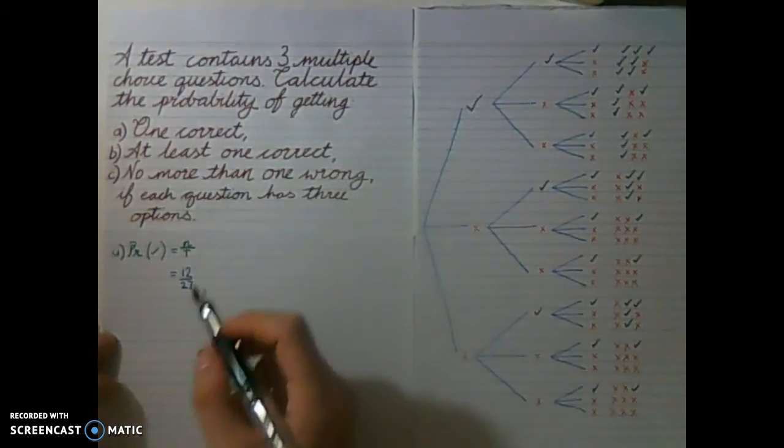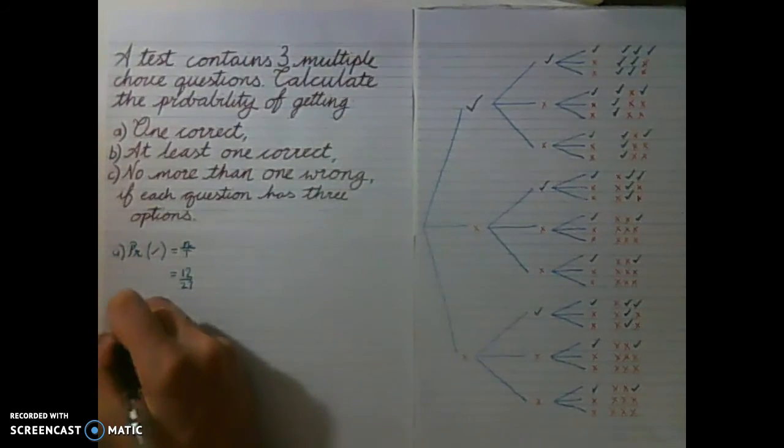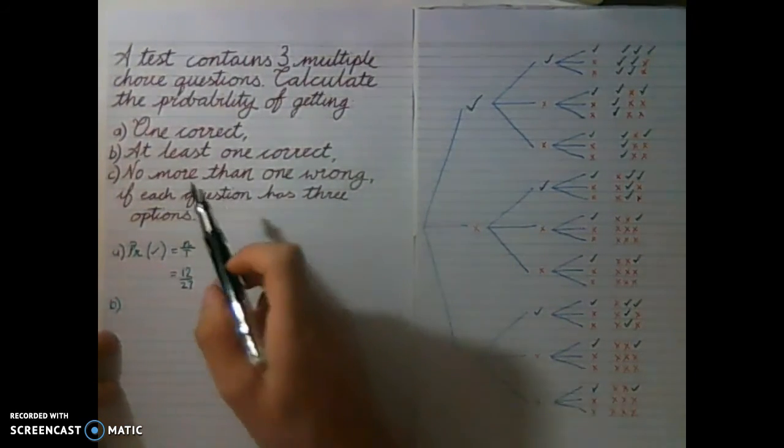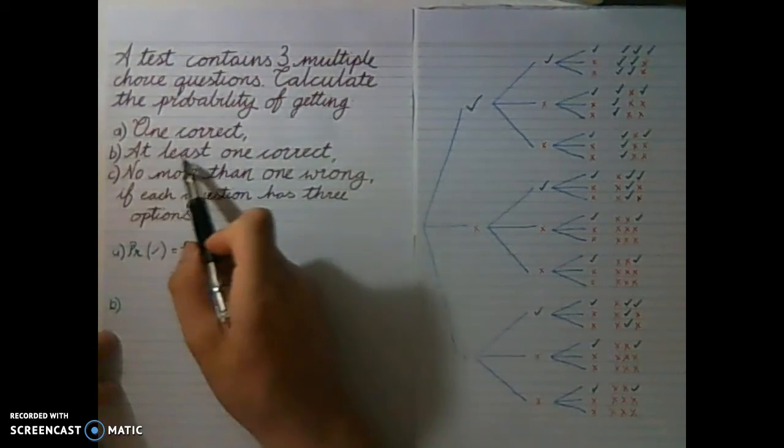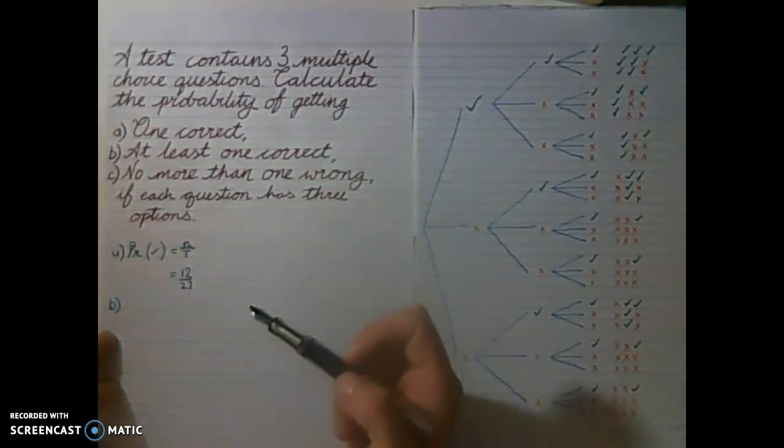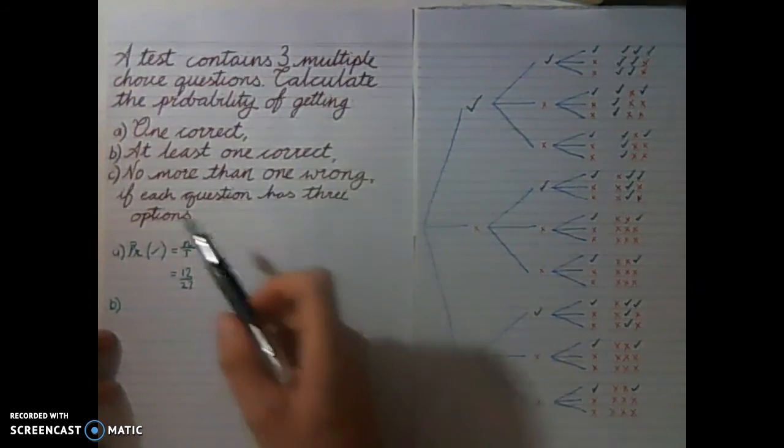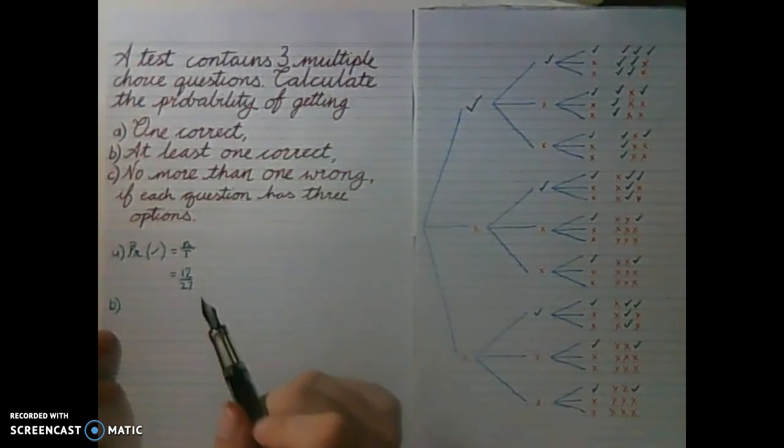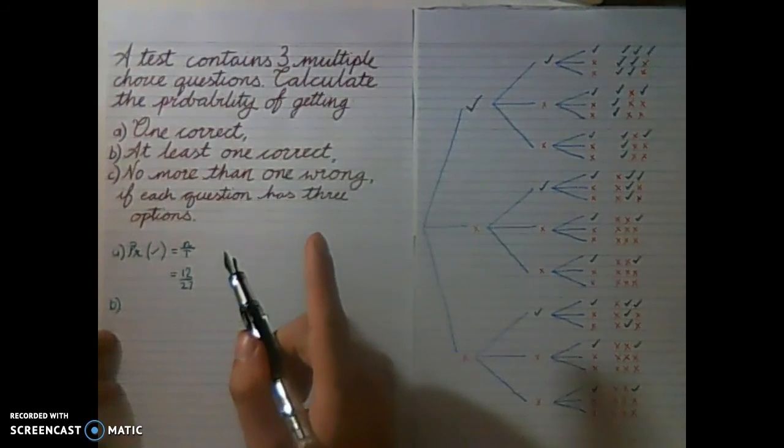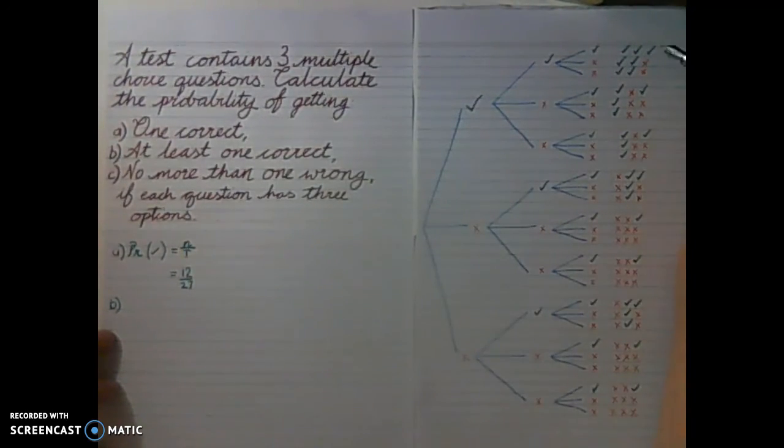Moving on to the next question, we now need to find if we have at least one correct. This is the sort of wording that you need to be very careful of in these questions. At least means that I have to have at a bare minimum one tick.